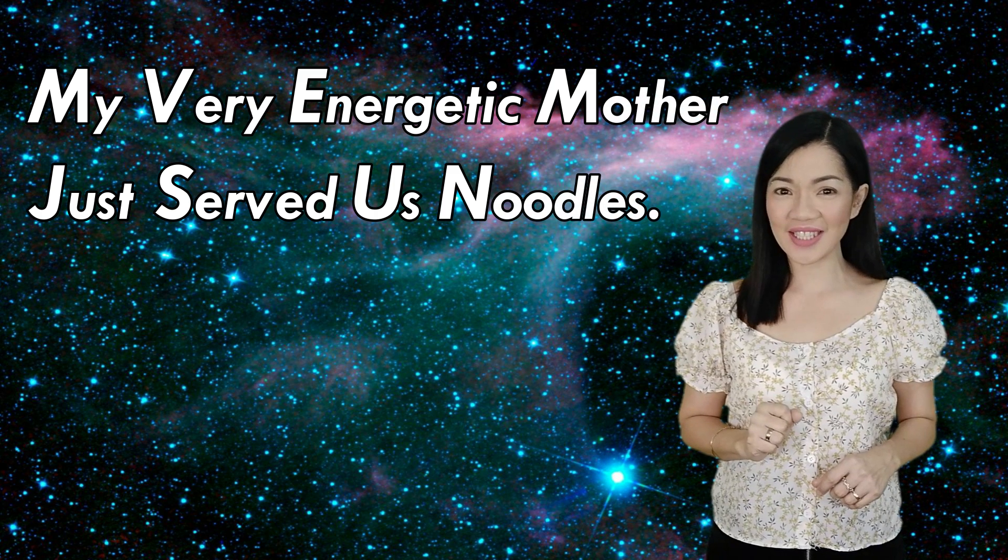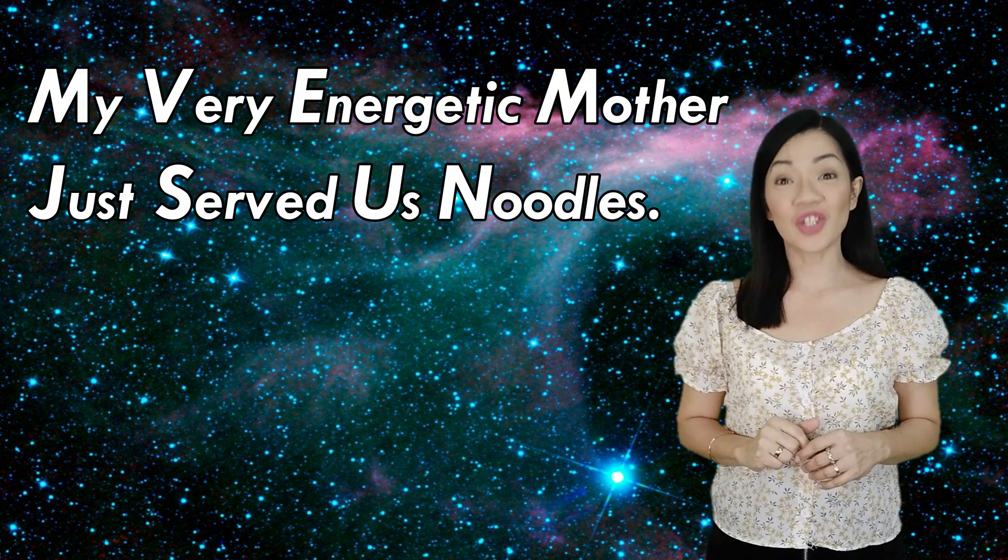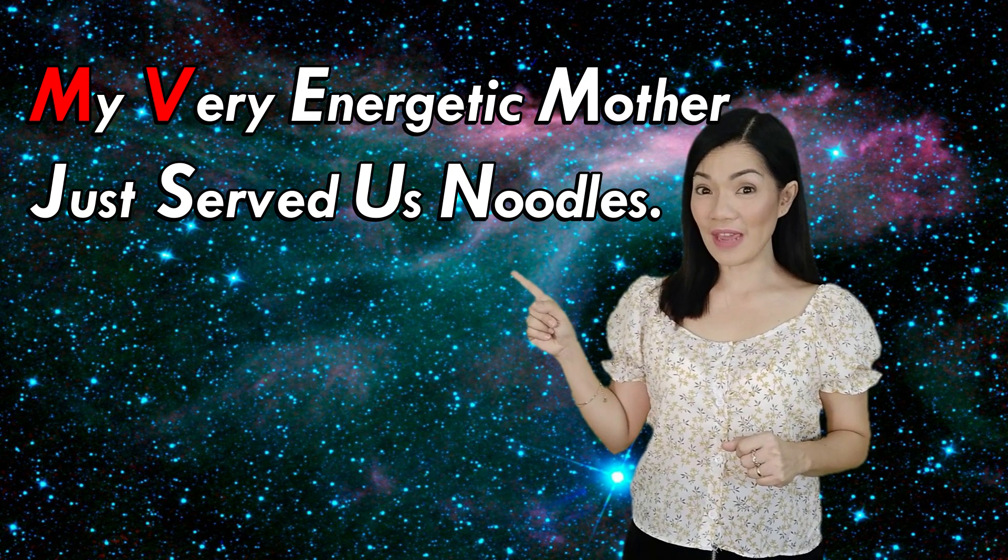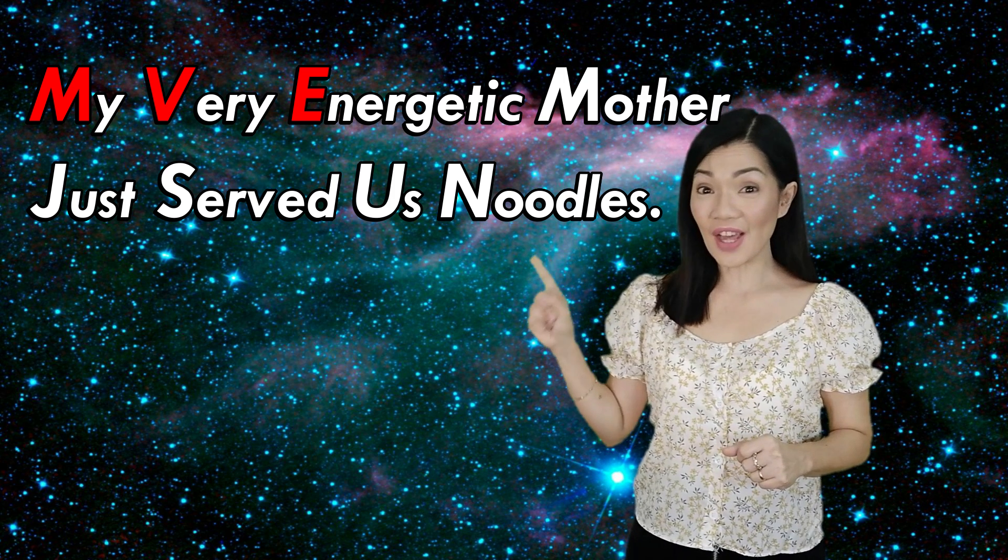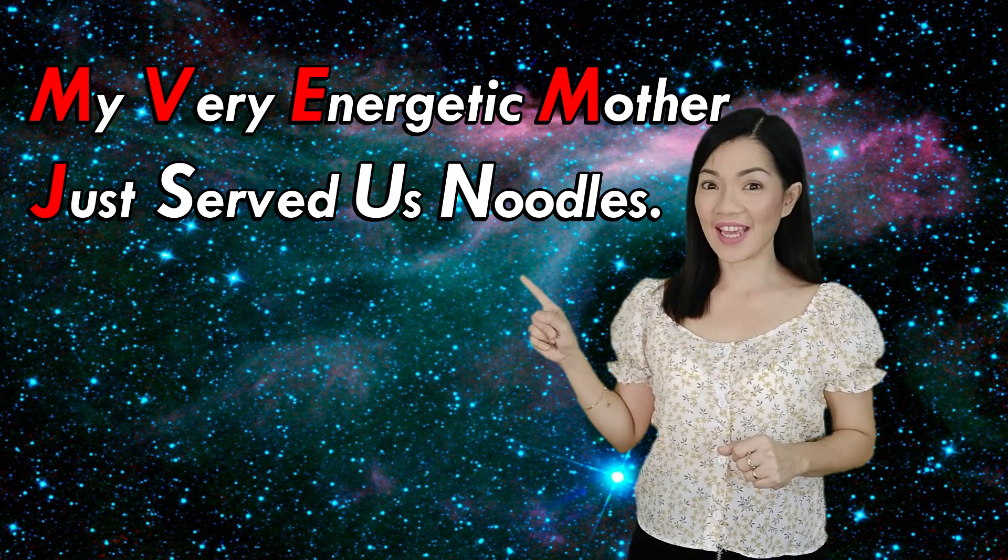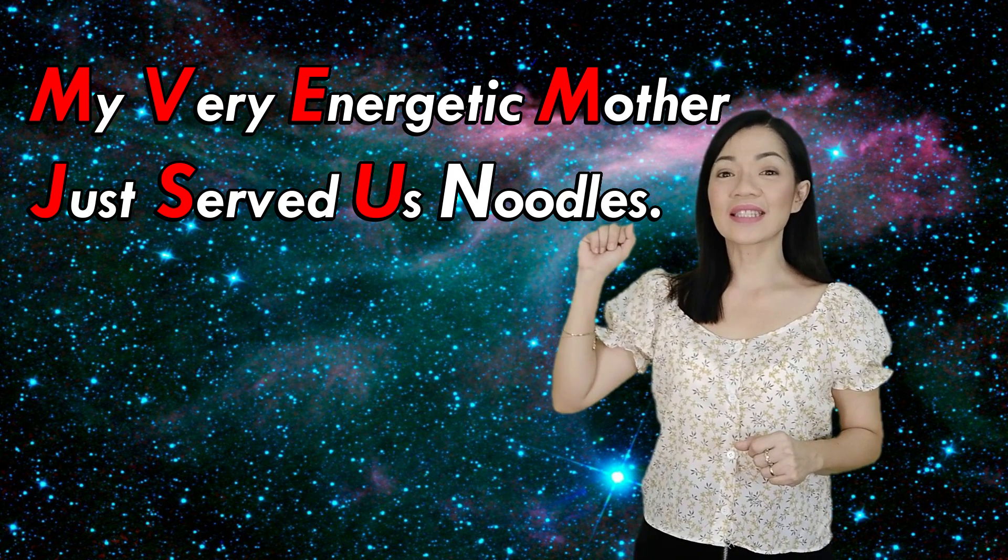My very energetic mother just served us noodles. In this sentence, the first letter of each word would give you the first letter of each planet. M is for Mercury. V is for Venus. E is for Earth. Another M is for Mars. J is for Jupiter. S is for Saturn. U is for Uranus. And N is for Neptune. So, remember this sentence and you will be able to remember all the names of the planets.